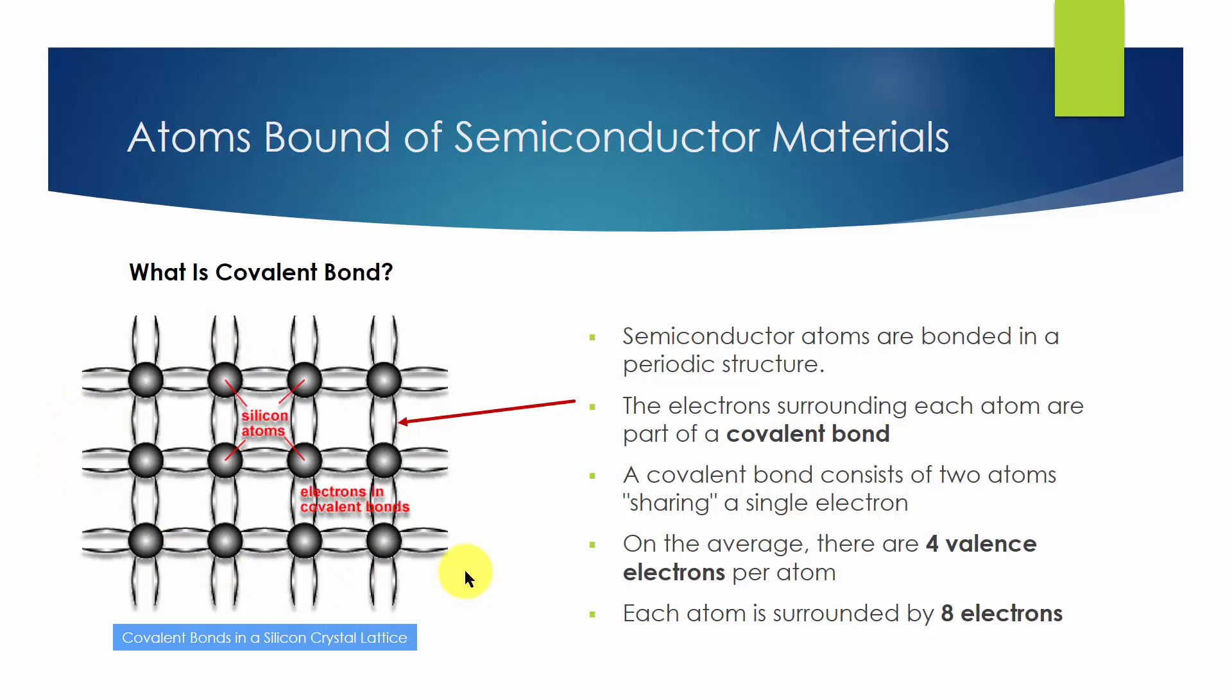The electrons surrounding each atom are part of a covalent bond. A covalent bond consists of two atoms sharing a single electron.